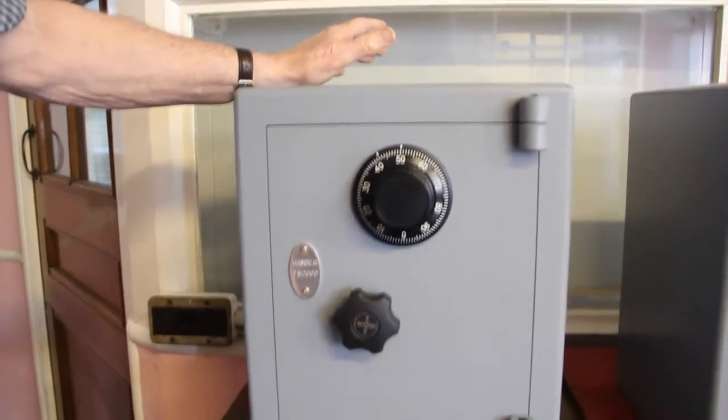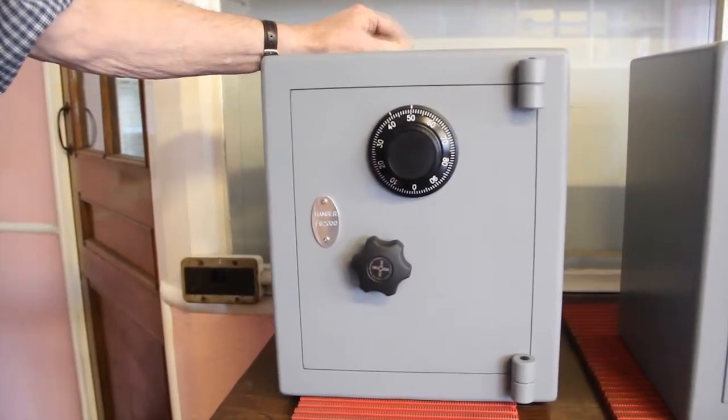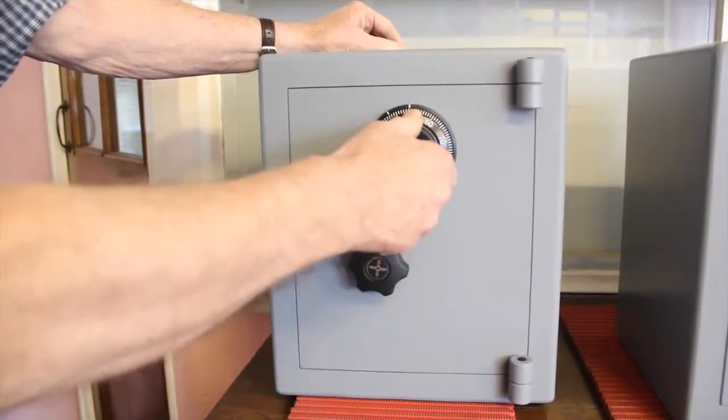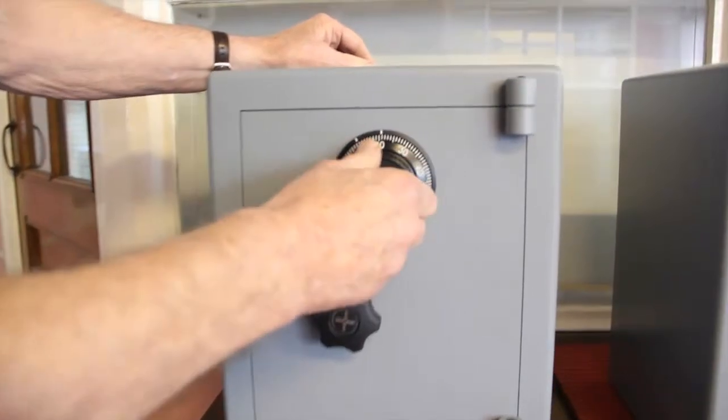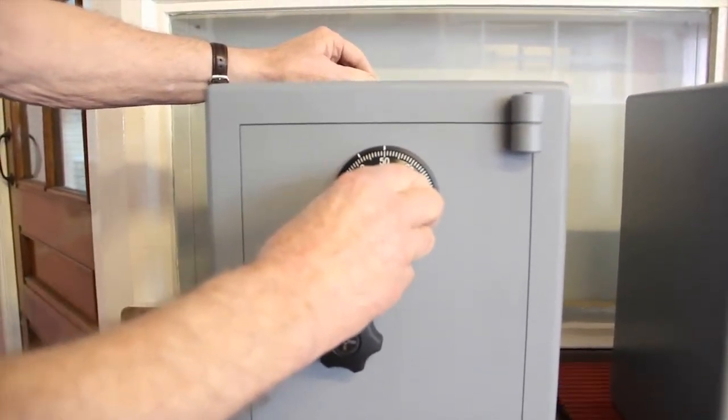because a lot of people forget the sequence that's so important when they come to open their safe. You have to twist the dial to the left until the first number in your code registers with the mark at the top.